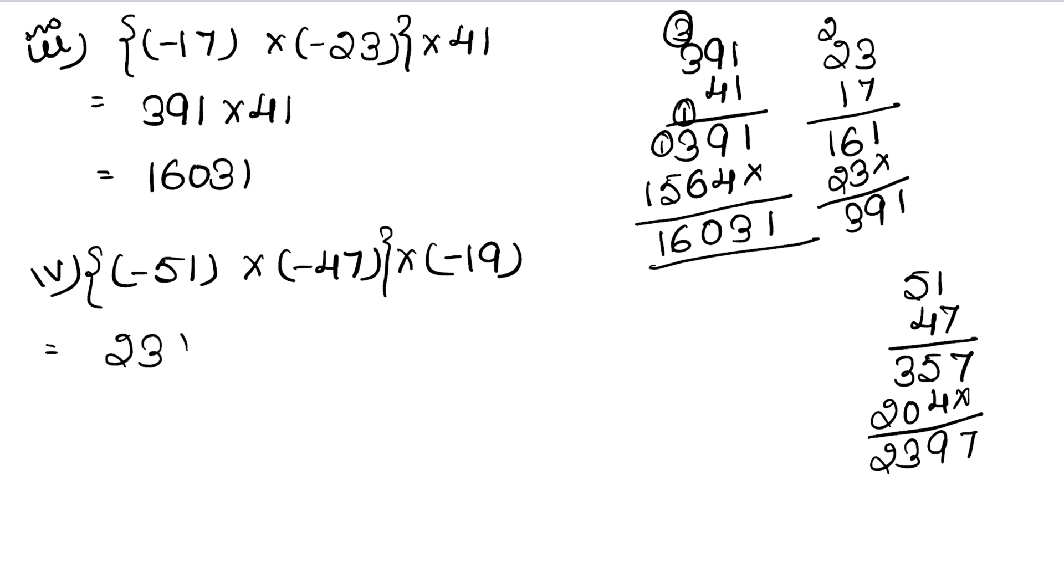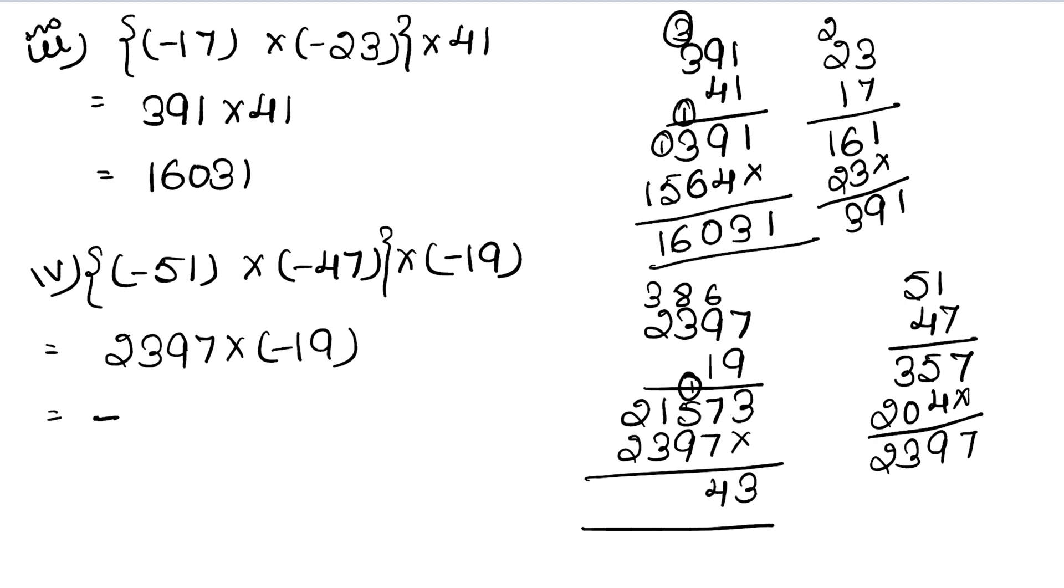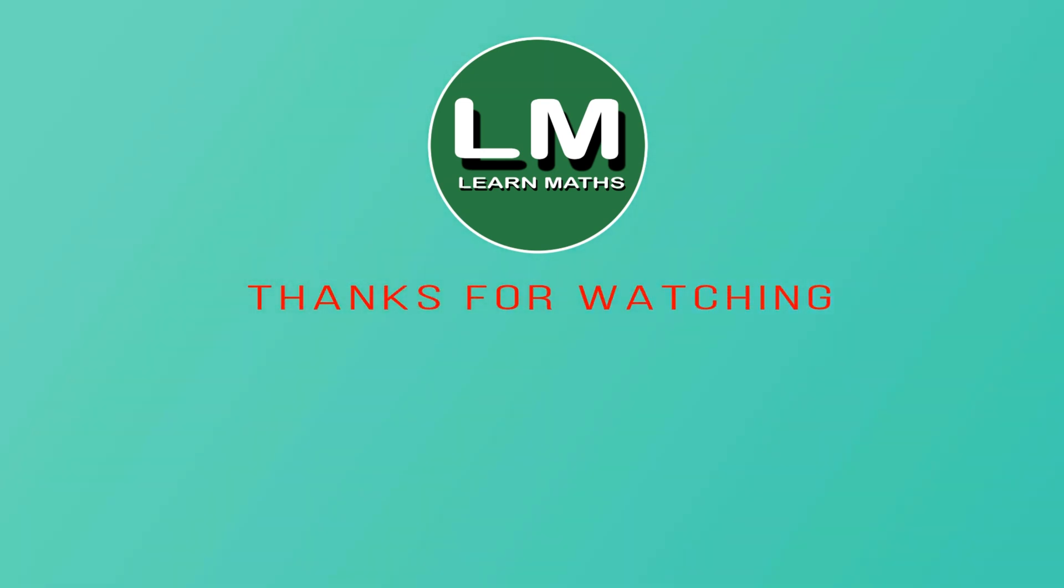Now plus 2397 × (-19). Plus times minus equals minus. So 2397 × 19: 9×7 is 63 carry 6, 9×9 is 81 plus 6 is 87 carry 8, 9×3 is 27, 28, 29. Then 1×7 is 7, 1×9 is 9, 1×3 is 3. Adding: 7, 3+9 is 12 carry 1, 9+7 is 16, 17, 18 carry 1, 3+1 is 4. With the minus sign, the answer is minus 45543.